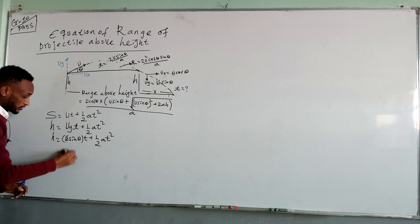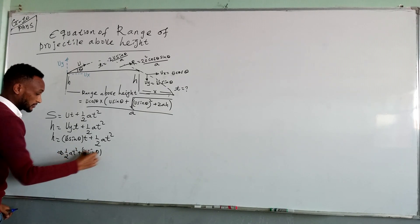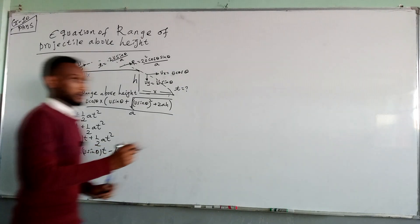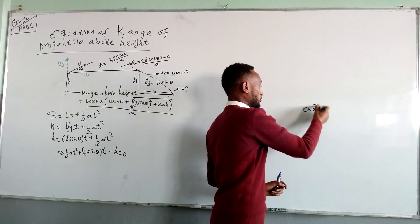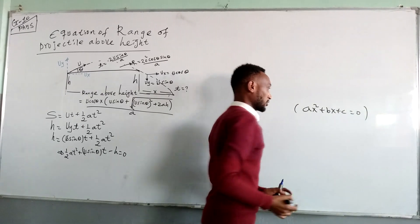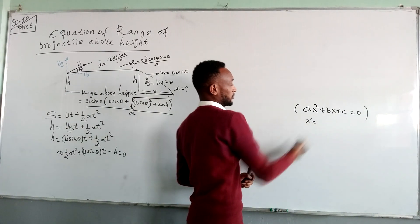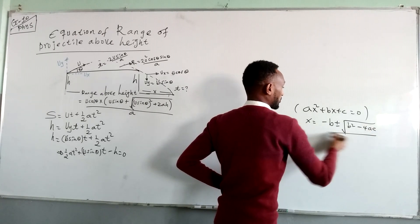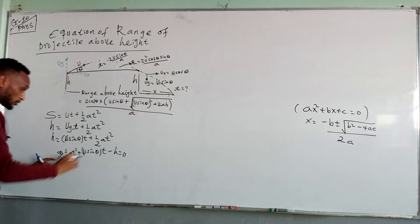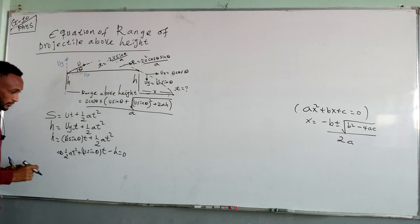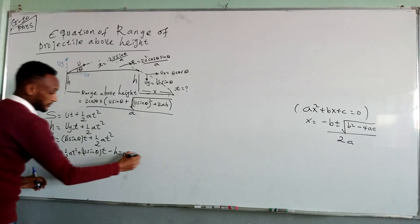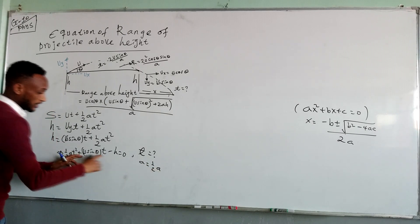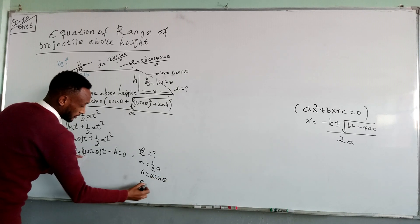We rearrange this equation into the form: ½a × t² + u sin θ × t − h = 0. We know the quadratic equation written as at² + bt + c = 0. This is a quadratic equation. To solve for t using the quadratic formula: t = (−b ± √(b² − 4ac)) / 2a. We apply the quadratic formula to solve for t, where our a-coefficient is ½a, our b-coefficient is u sin θ, and our constant c is −h.